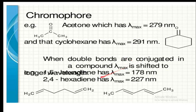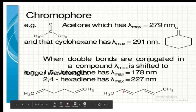When double bonds are conjugated in a compound, lambda maximum is shifted to a longer (higher) wavelength. This is known as a bathochromic or red shift.